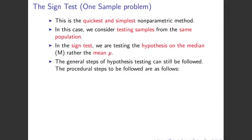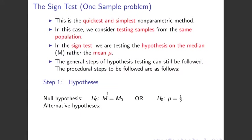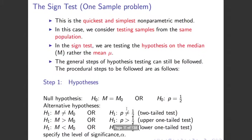The general steps of hypothesis testing can still be followed — we're going to do the five steps again. Step one: state the null hypothesis. The null hypothesis is m equals m0, which is some specified value given in the question, or equivalently p equals one half. The alternative hypothesis is m not equal to m0 (two-tailed test), or p not equal to one half. For the upper one-tailed test: m greater than m0, or p greater than one half. For the lower one-tailed test: m less than m0, or p less than one half. We also specify the level of significance alpha.